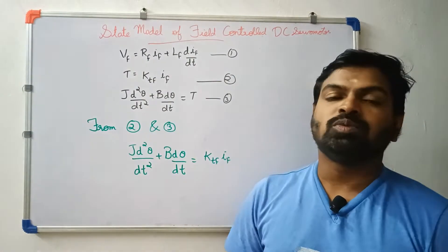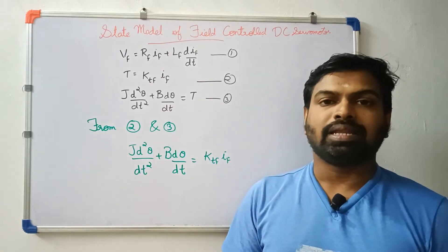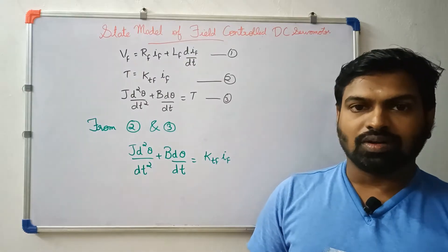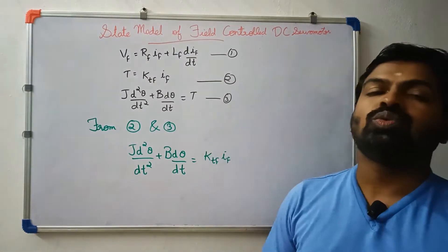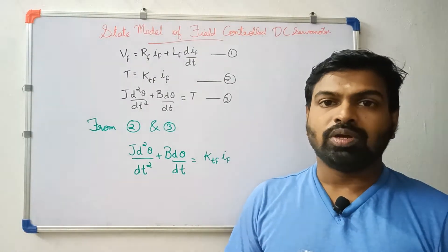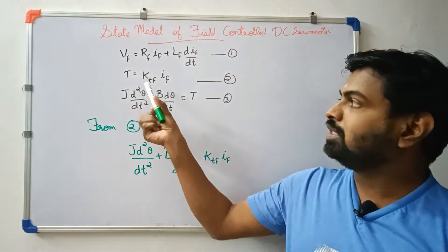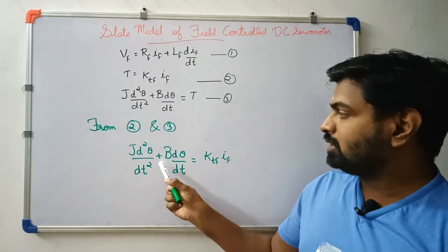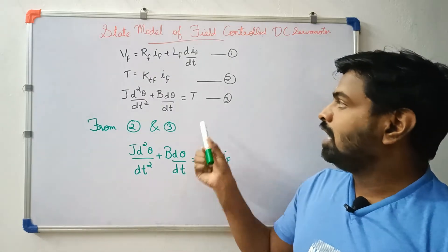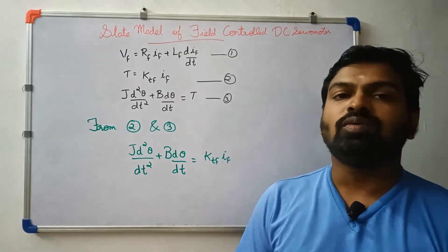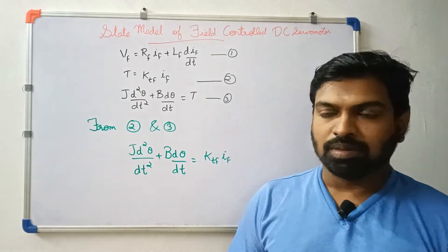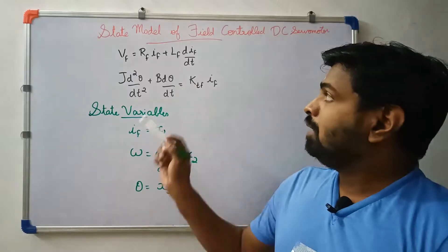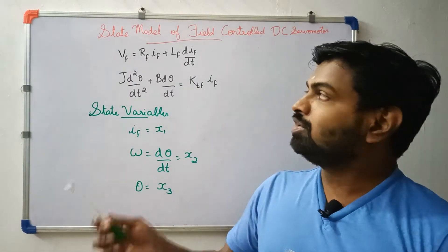Now let's convert electrical torque and mechanical torque. From equations 2 and 3 we have the combined equation: j·d²θ/dt² + b·dθ/dt = ktf·if. Then we have the first order differential equation.